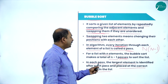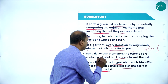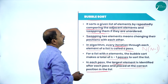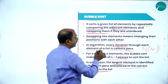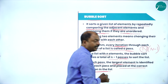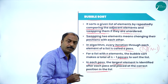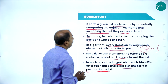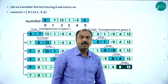In each pass, that is in each iteration, the largest element is identified and placed at the correct position in the list. At each and every pass we are going to find out the largest element, and this largest element is going to be placed at the correct position in the given list. So this is the algorithm or procedure for bubble sort — compare adjacent elements, swap if unordered, and for a list of size n it takes n minus 1 passes.